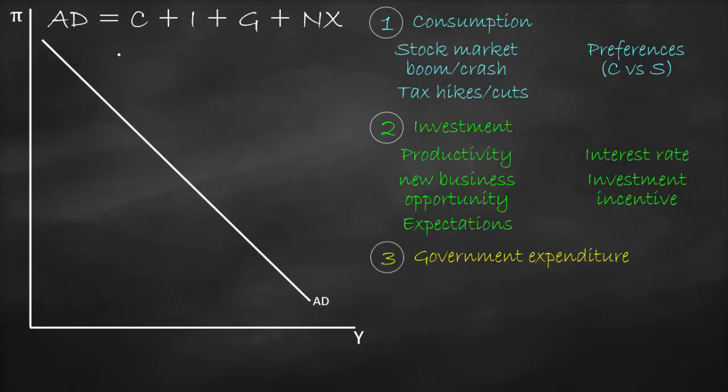The third category is government expenditure, which refers to fiscal policy — either expansionary or contractionary. Expansionary fiscal policy increases government spending and decreases taxes, shifting aggregate demand to the right. Contractionary fiscal policy increases taxes and decreases government spending, shifting aggregate demand to the left.